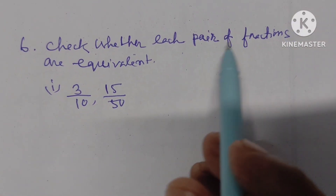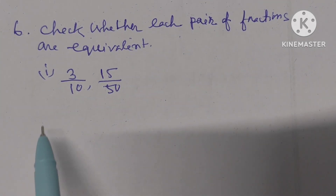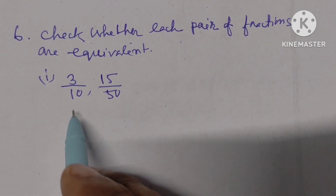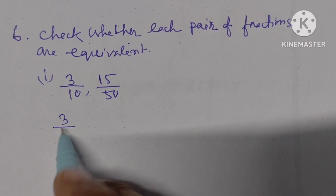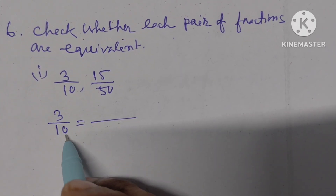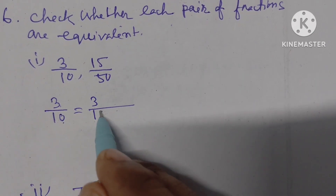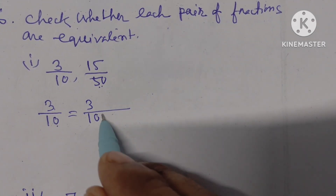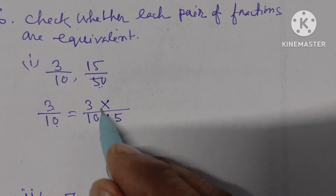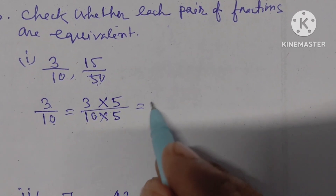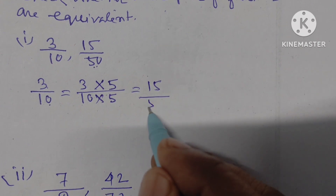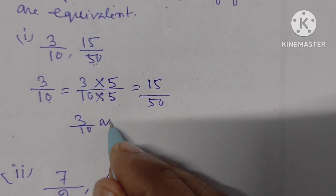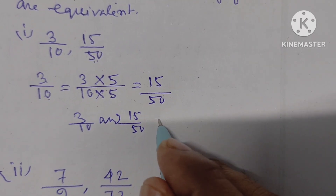Number C: Check whether each pair of fractions are equivalent. We have 3 by 10. The denominator is 10 and the numerator is 3. The other fraction has denominator 50. So we multiply the denominator by 5. Similarly, we multiply the numerator by 5. 3 times 5 is 15, 10 times 5 is 50. That means 3 by 10 and 15 by 50 are equivalent.